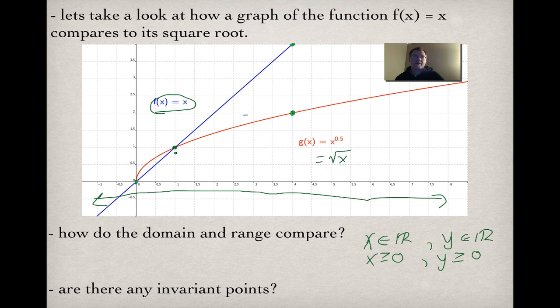Are there any invariant points? Yes — there are two: the point where f(x) has a height of 0, and the point where f(x) has a height of 1, since √0 = 0 and √1 = 1.